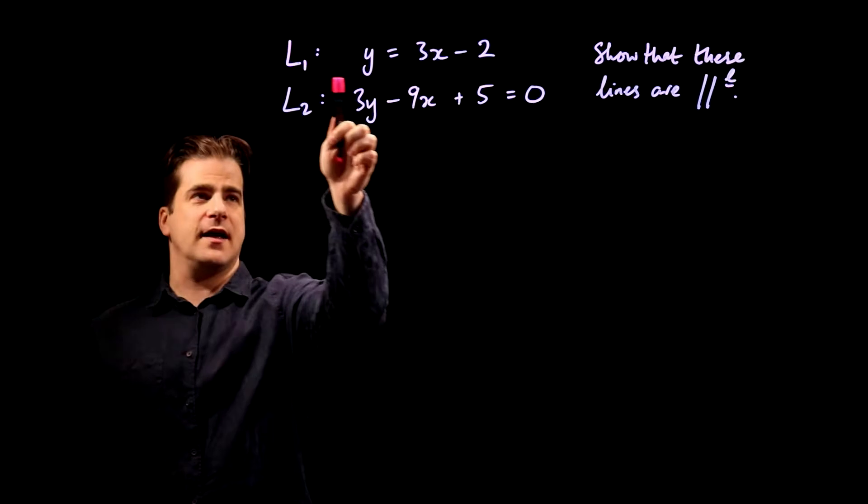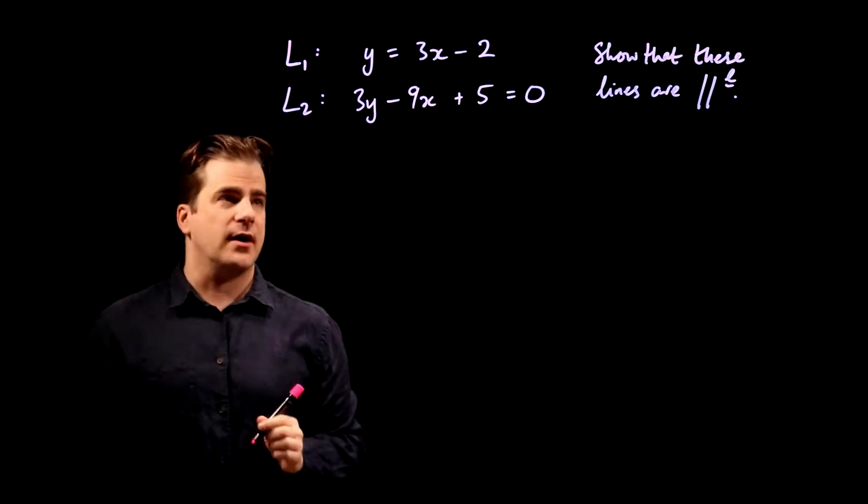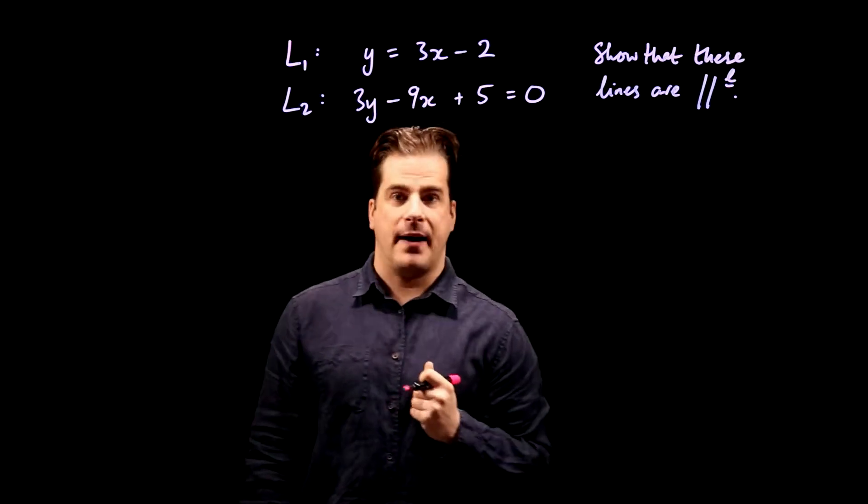We have two lines, L1: y equals 3x minus 2, and L2: 3y minus 9x plus 5 equals 0, and we have to show that these lines are parallel.